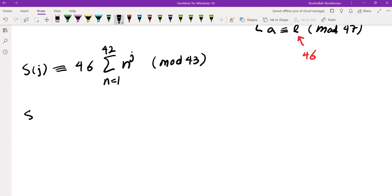And similarly, S(J) is going to be 42 times the sum of n^j, n from 1 to 46.